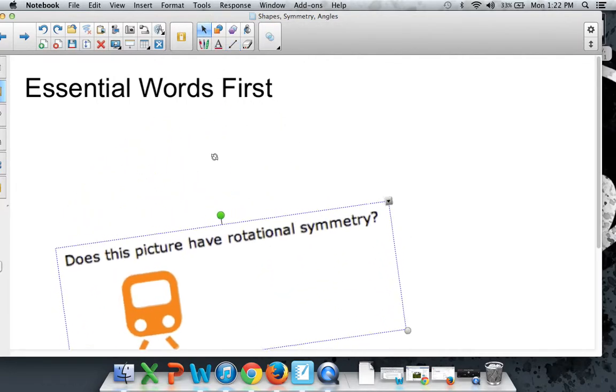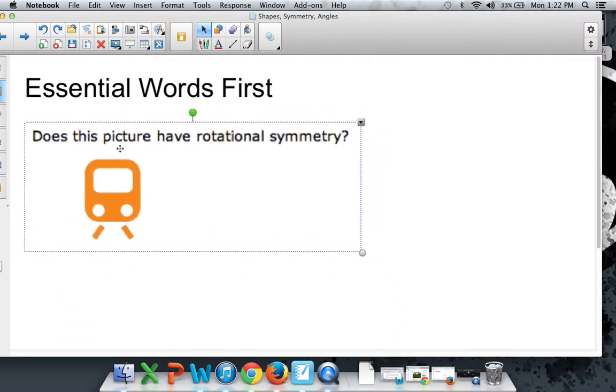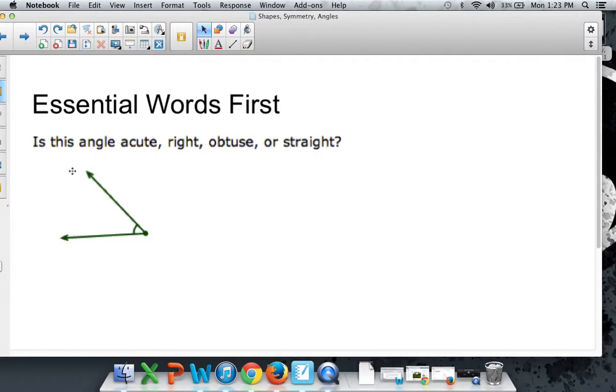Basically what you're looking for in your shapes with rotational symmetry is some kind of circular nature to it, some kind of circular nature. Doesn't have to be a circle, but so that when you rotate it upside down or on its side, whatever, it still kind of looks the same. And this one, the shape would not.